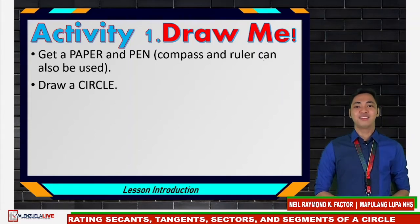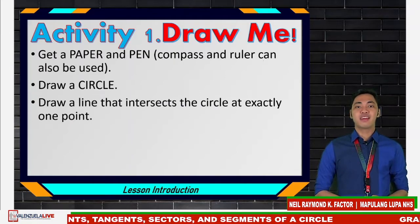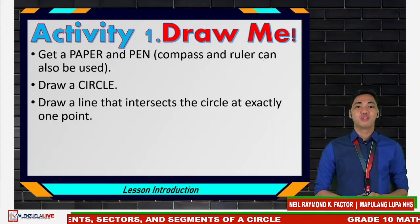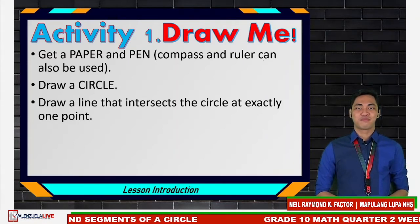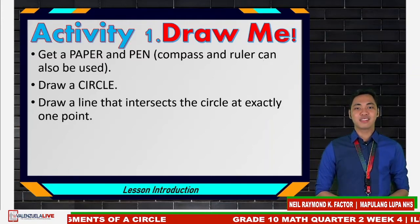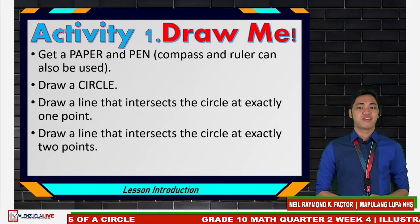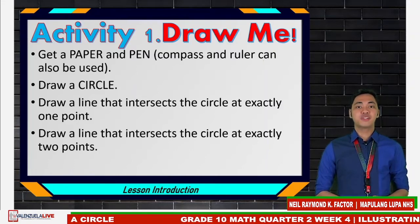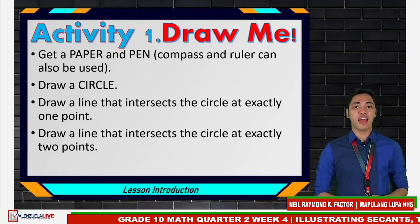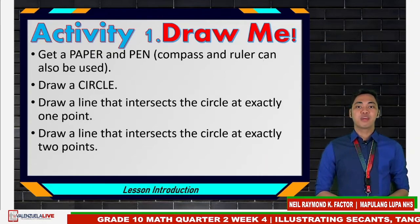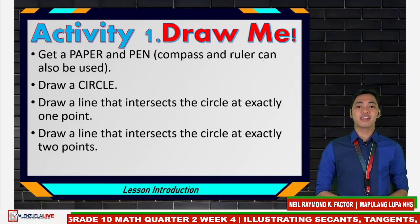Are you done? Alright. Step number two: draw a line that intersects the circle in exactly one point. I hope you are done. Next, draw another line. This time, it should intersect the circle at exactly two points.